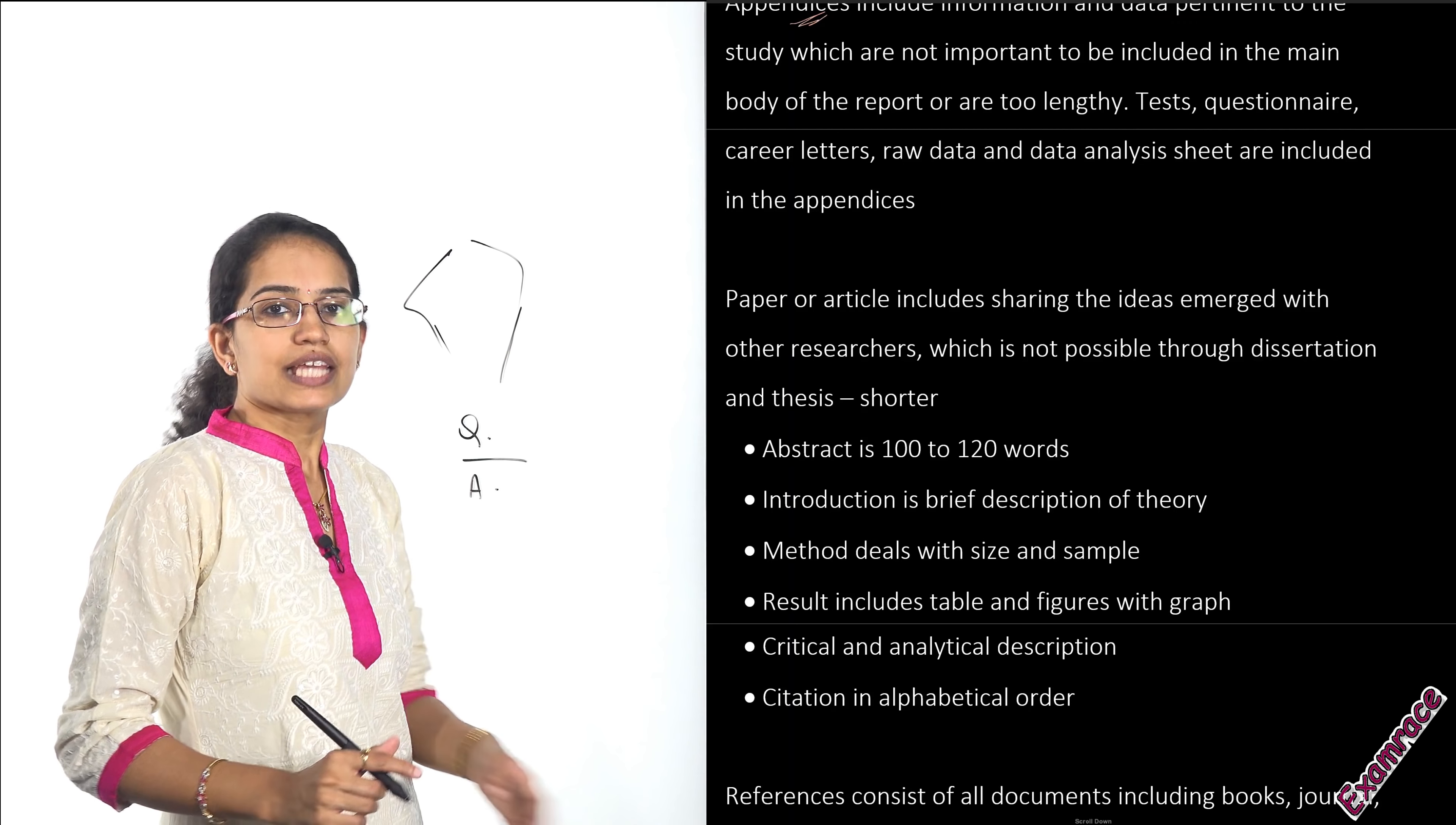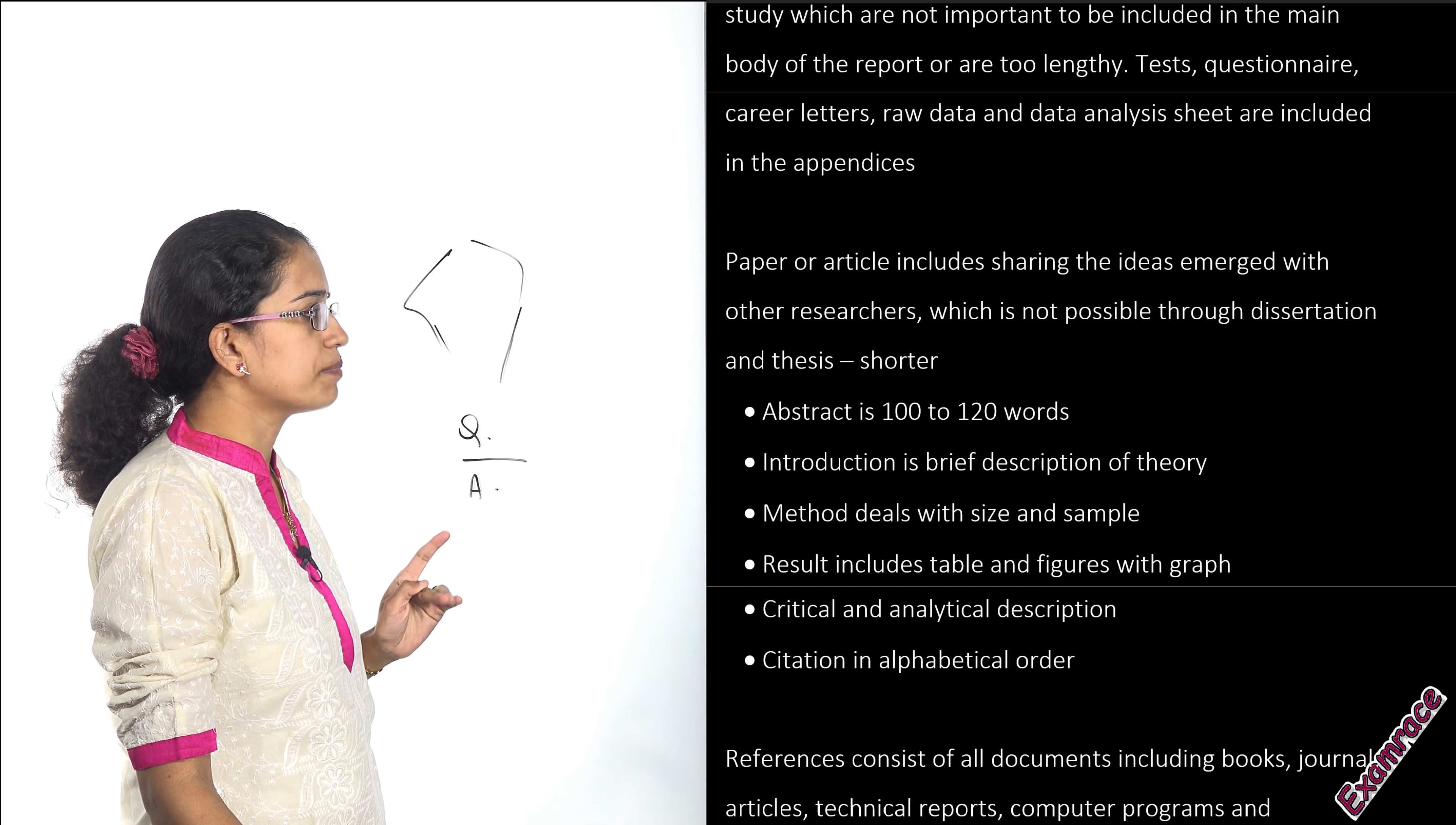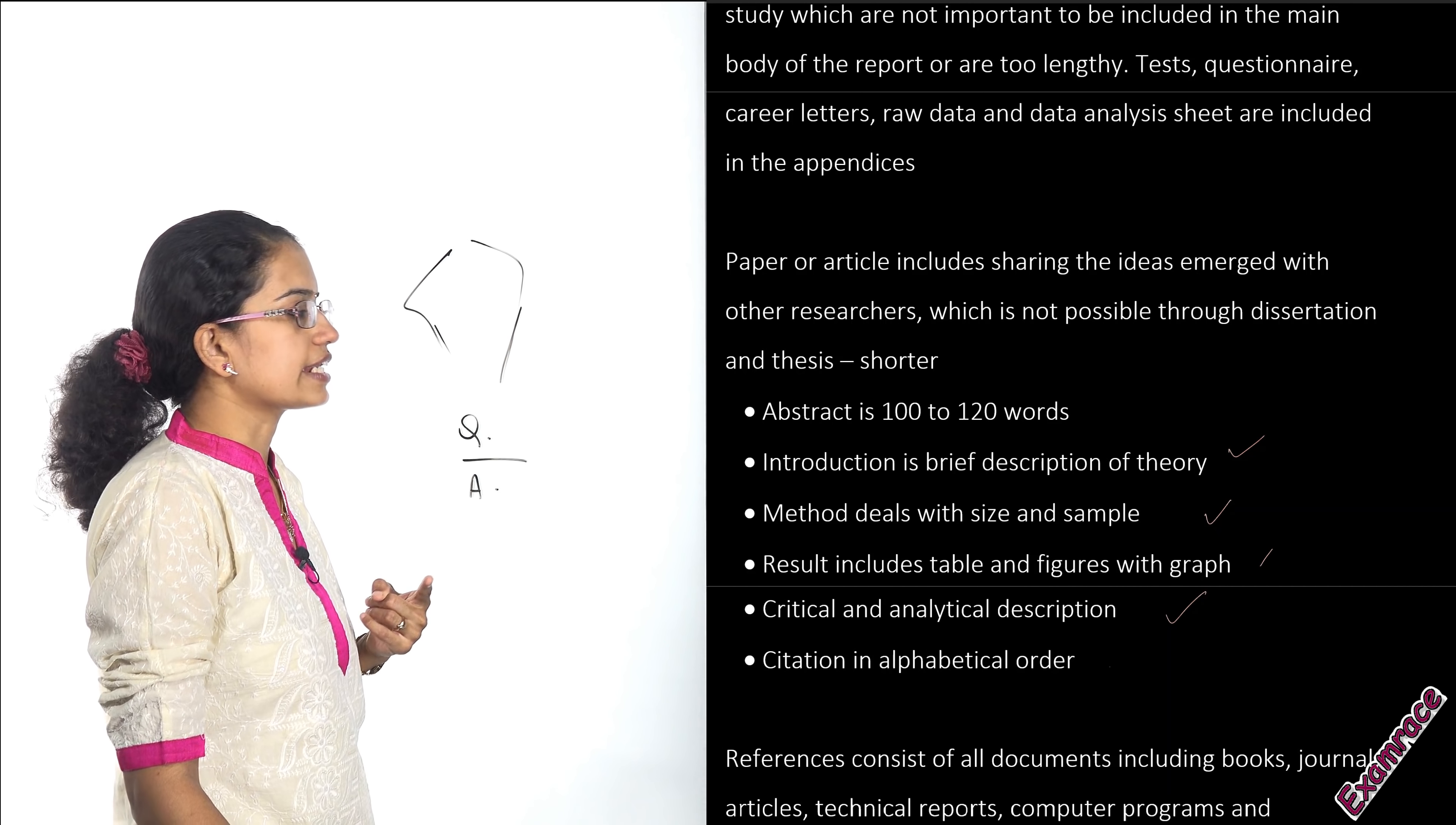Sometimes you might be sending your articles for journals as research papers. For that, you need to have a very small abstract, around 100 to 200 words, then a brief introduction which explains the theory, the method that you are using, the results indicated with graphs or tables, a critical analysis of the research, and finally the citations in alphabetical order.